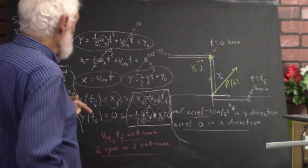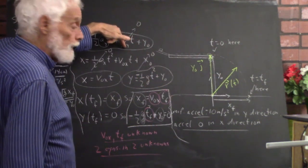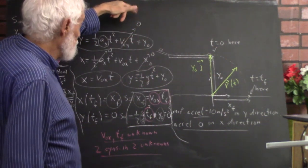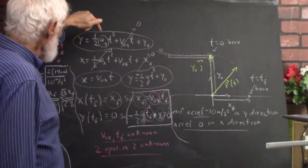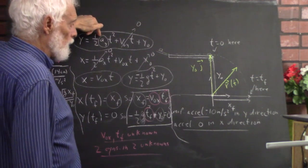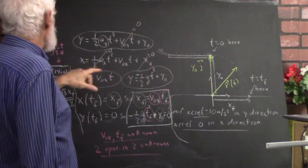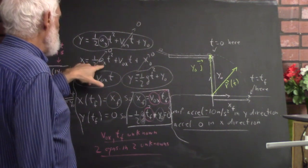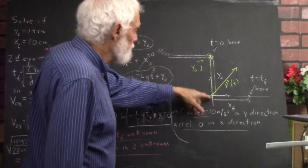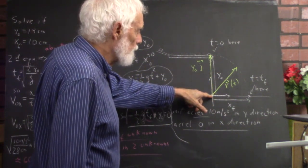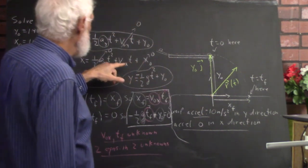In this case, the initial velocity is totally horizontal, so the initial y-velocity is zero, making that term zero. The y-acceleration is negative ten meters per second squared. In the x-direction, you have zero acceleration, so that term is zero. Since we put the origin of the coordinate system where we did, the initial x-position is zero. Note that the initial y-position is not zero.